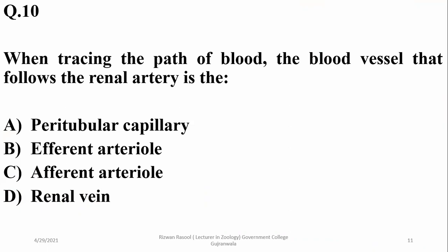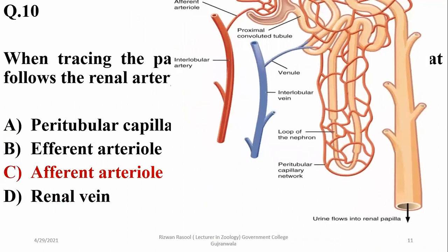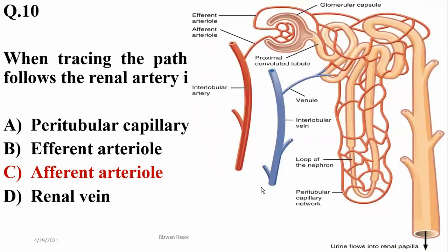When tracing the path of blood, the blood vessel that follows the renal artery is the afferent arteriole, which leads to the glomerulus. From the renal artery there are many branches, but the major pathway is that the renal artery divides into arcuate and interlobular arteries, which ultimately form the afferent arteriole leading to the glomerulus.